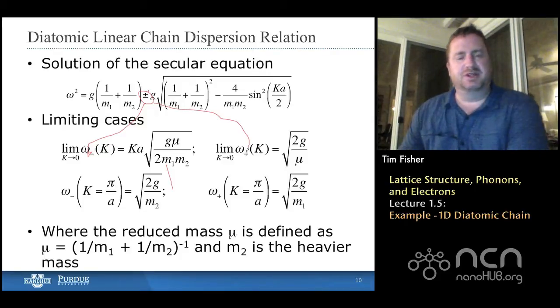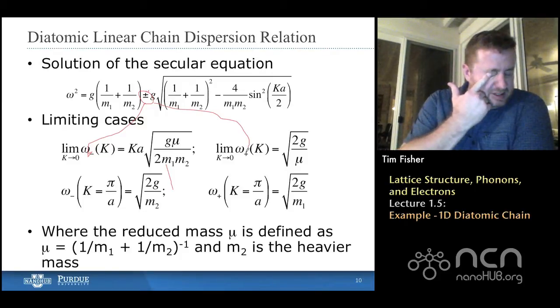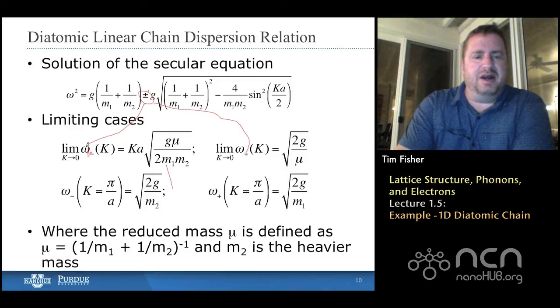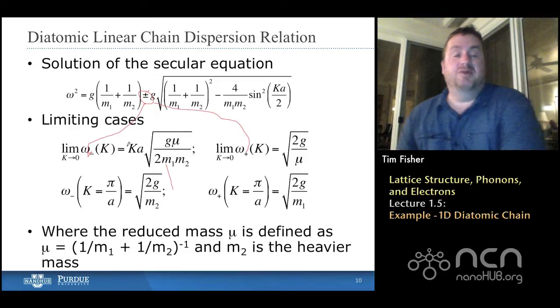Okay. And we're taking some limiting forms here. So, let's think about this minus branch. The minus branch has omega as k goes to zero. Omega is proportional to k. But we've seen that before. That's a linear relationship between the two.